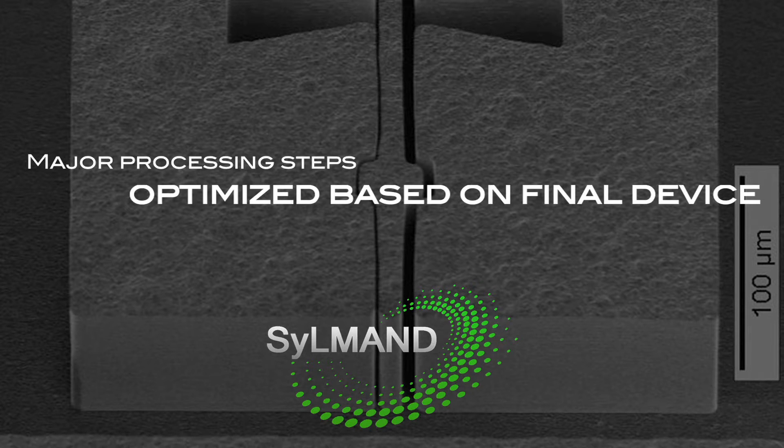Major blocks of processing steps in the fabrication sequence are provided. Based on the prerequisites of the final microstructure or device, the individual processing steps for each sample typically include optimized variations of the following.